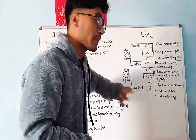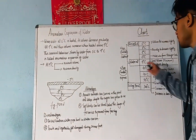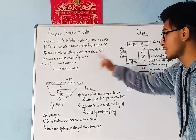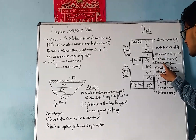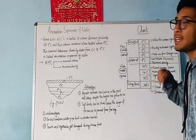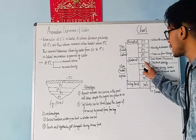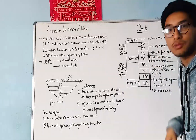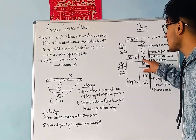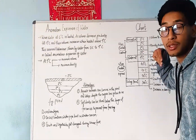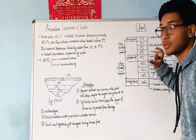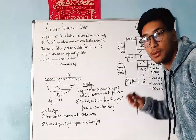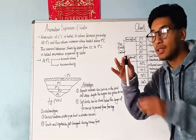Now, what do we need to understand? We need to take 4 degrees Celsius. Water at 4 degrees Celsius has maximum density. We need to think about this: when you have 4 degrees Celsius and the temperature of water is cooling, the volume density is at a minimum. At 4 degrees Celsius, the density is maximum and volume is minimum.